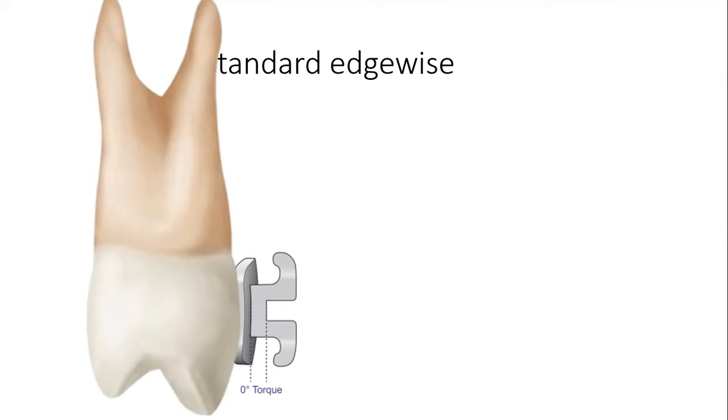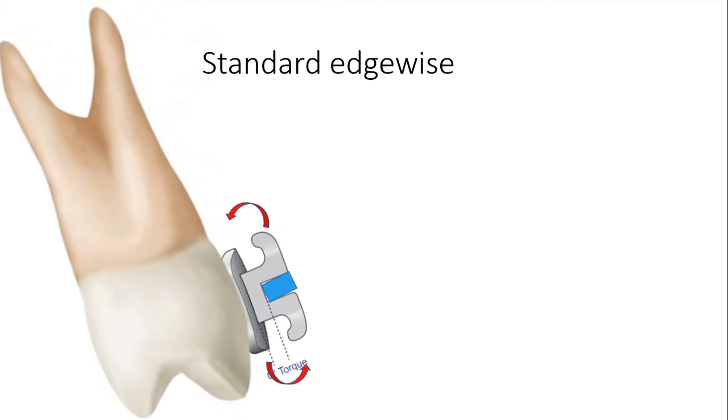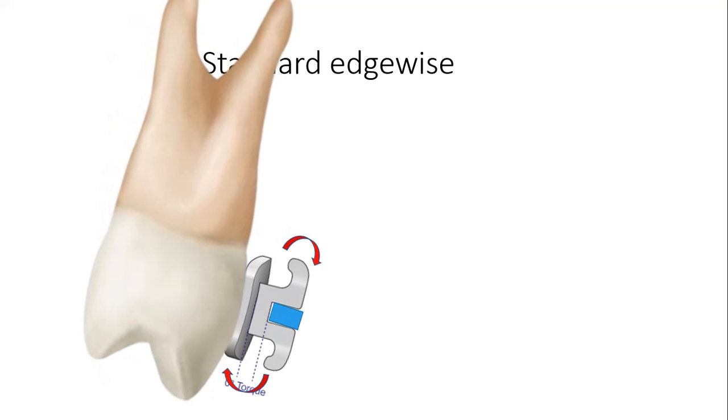Now I am repeating what is the advantage of using rectangular bracket slot and rectangular wire. When rectangular wire is placed in the bracket and you are twisting this wire in anti-clockwise direction, you will have some control over the movement of the root. While twisting the wire in opposite direction or clockwise direction, you can bring the root labially. So in this way, you can have some control over the torque. This torque movement was impossible with begg appliances and other bracket systems which had a round wire slot. It was a bit difficult even with ribbon arch wire, but it is much easier with edgewise brackets.